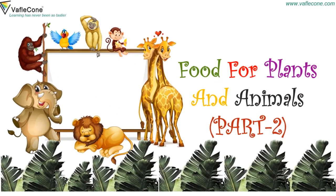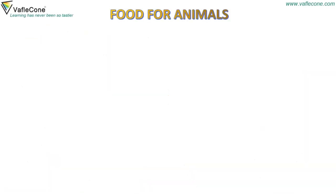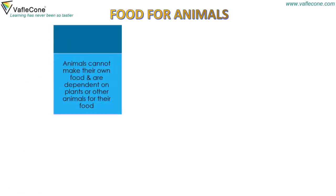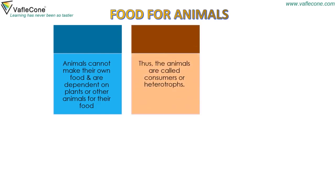Food for Plants and Animals, Part 2: Food for Animals. Animals cannot make their own food and are dependent on plants or other animals for their food. Thus, the animals are called consumers or heterotrophs.